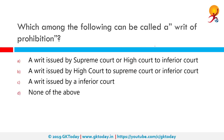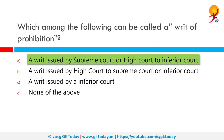Which among the following can be called a writ of prohibition? The correct answer is a writ issued by the Supreme Court or High Court to an inferior court. A writ of prohibition means that a higher court — like the Supreme Court or High Court — may prohibit lower courts such as special tribunals, magistrates, or commissions from doing something beyond their jurisdiction or contrary to the rule of natural justice. An example would be if a judicial officer has personal interest in a case, it may hamper the course of natural justice.